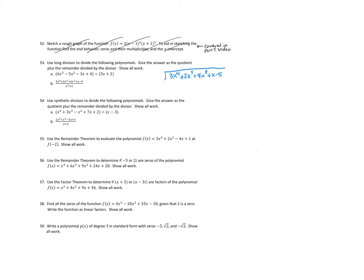Again, if we were missing any of these terms we would just add a 0 — for example, if we were missing the x cubed term, we'd put 0x cubed, so that we had a placeholder there so we don't get out of place. So we're dividing that by x squared plus 0x — there's my placeholder — plus 2.